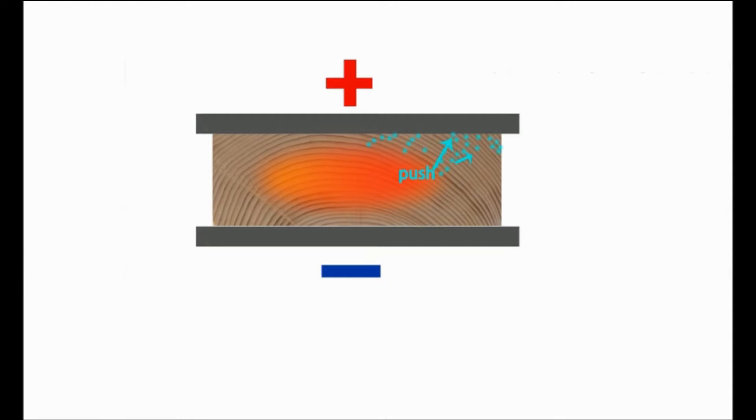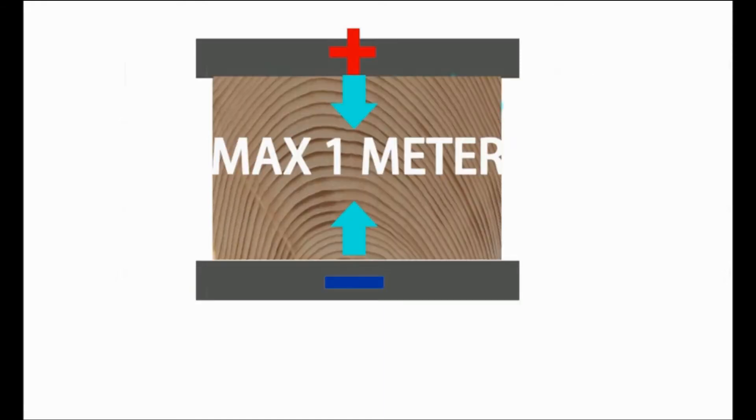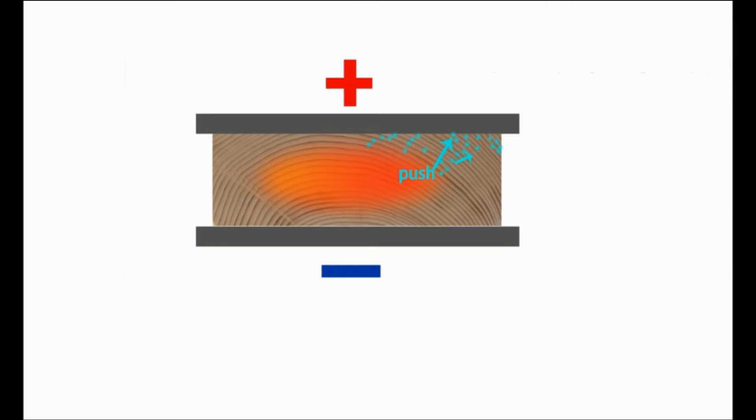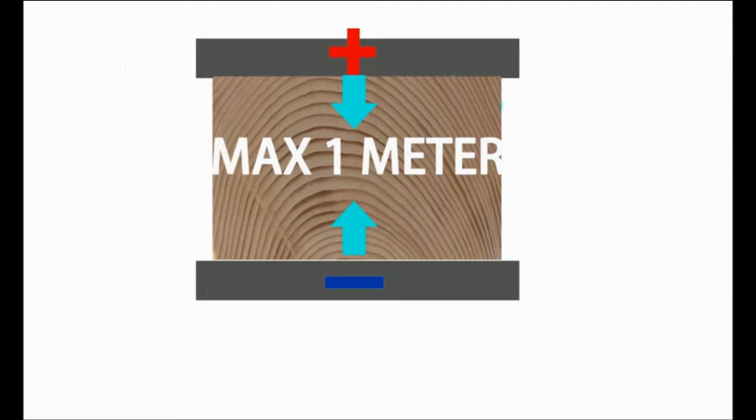Temperature within the wood is higher than the surface, so the water is pushed out and moved to the surface of the wood. Where there is more water, that section will receive more power. This is the reason why radio frequency dries wood uniformly.